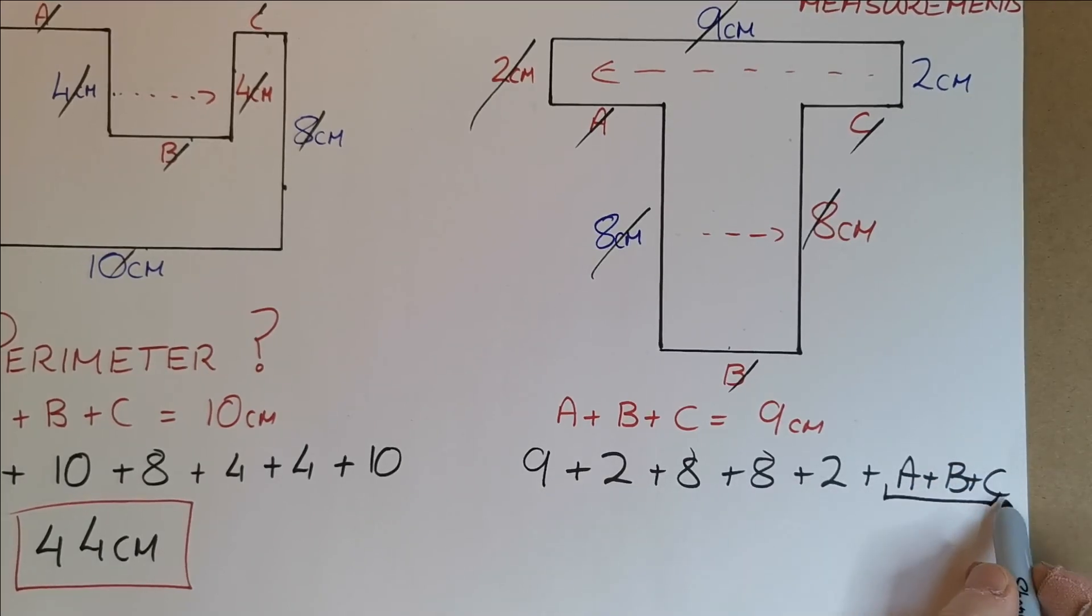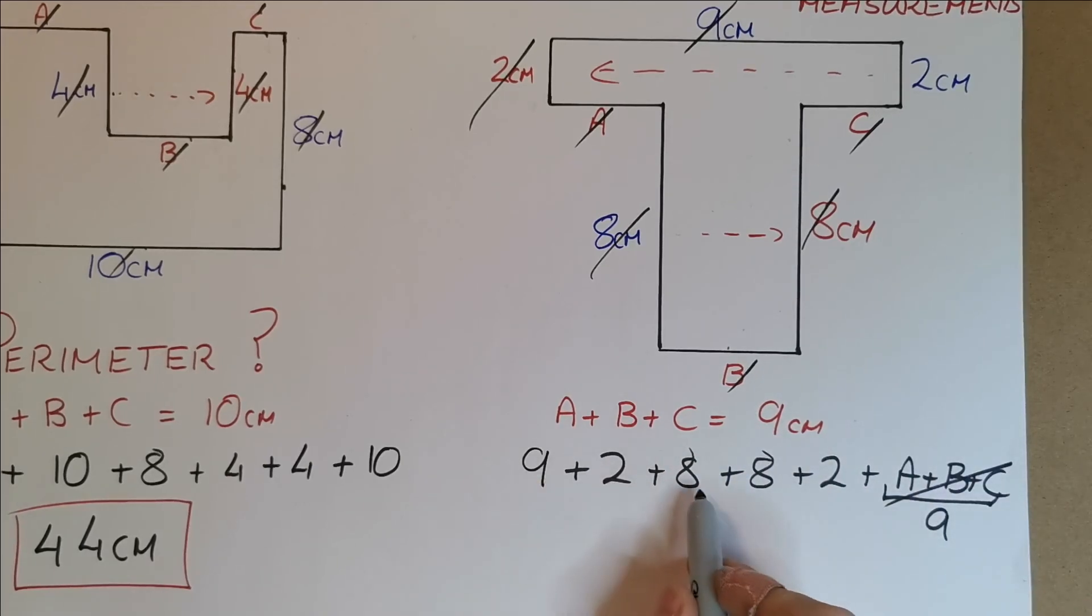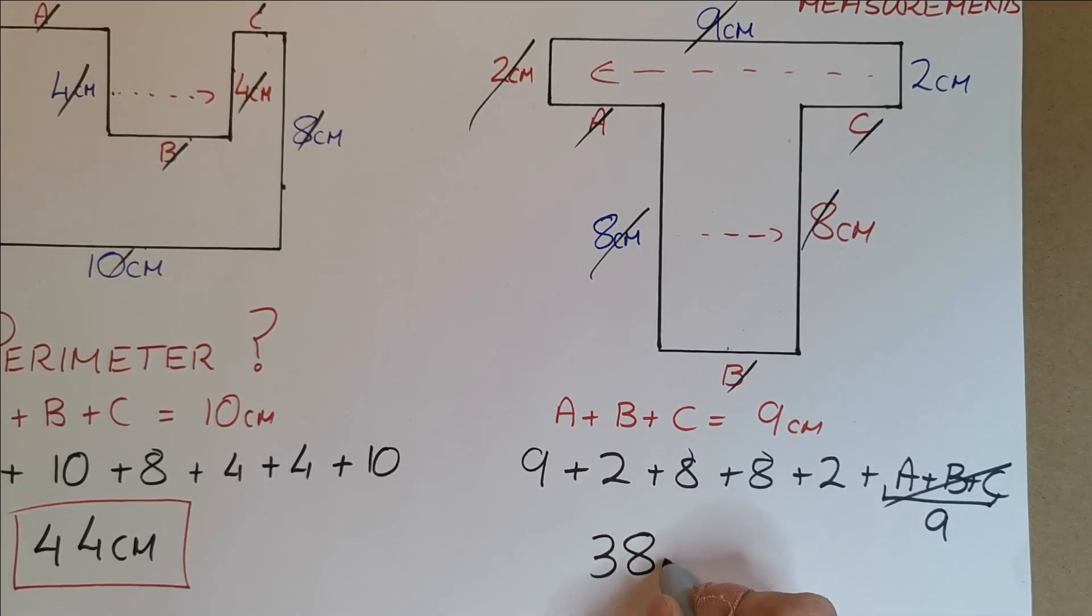So, we actually know now that A, B, and C is equivalent to 9cm, so this is like a 9. So if you like, I have 9, plus 2, plus 8, plus 8, plus 2, plus 9. So both of these make 10, so that's 20, and looks like to be 18, so it looks to be 38 when you add all those together.